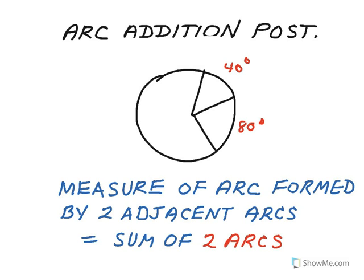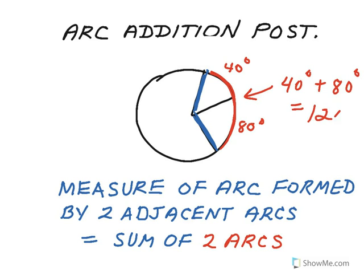Next we have the arc addition postulate, which is very logical. It says we can take two adjacent arcs and add their measures to get the measure of the larger arc. So the big red arc here has a measure of 40 degrees plus 80 degrees, which is 120 degrees. That's the arc addition postulate — you add adjacent arc measures to form the measure of a bigger arc.